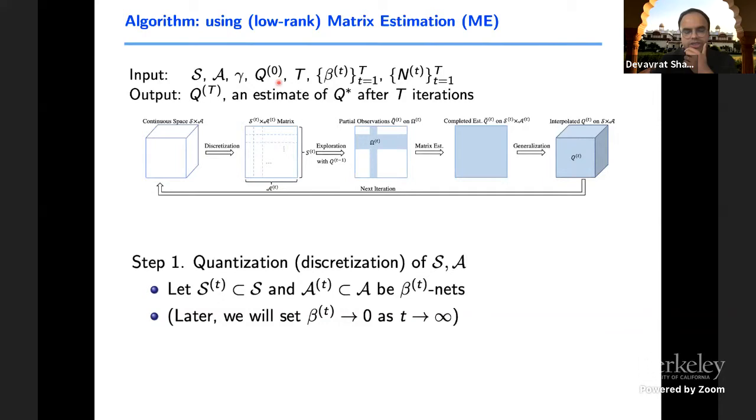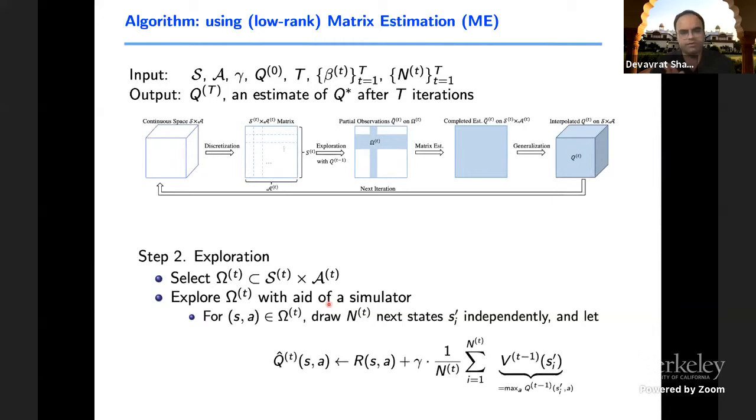In pictures, roughly the algorithm looks something like this. We're trying to do effectively Q learning, but in a specific manner. These are the inputs, you start with some initialization. Initially, you have a continuous state space, on which you have some initial Q naught. First we do is that we discretize the state space. And so you've got finite set of states and finite set of actions. And this is the matrix of interest. For this matrix of interest, what we're going to do, that's the quantization.